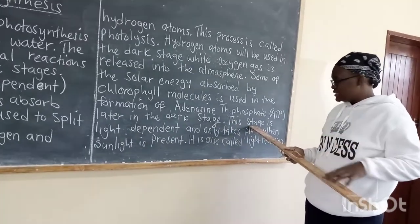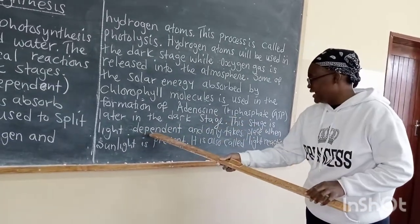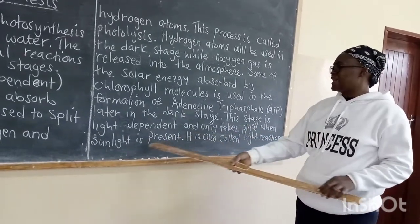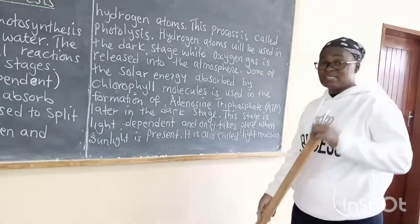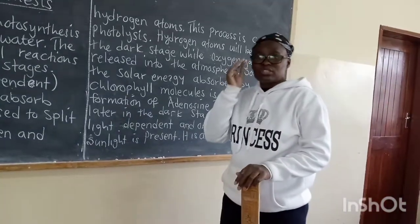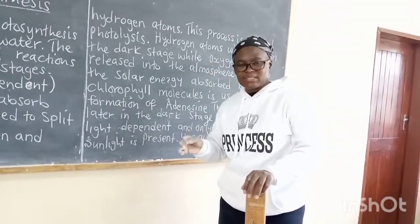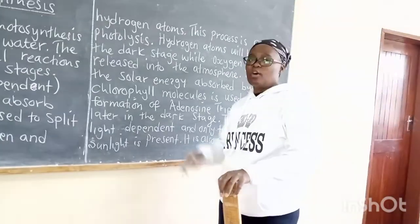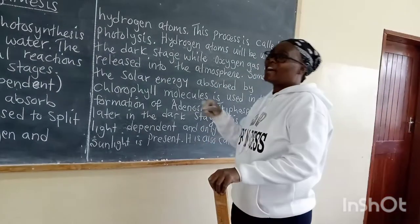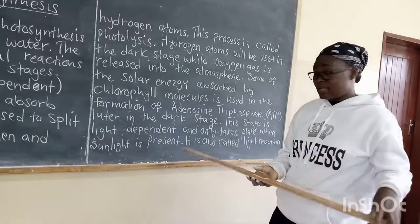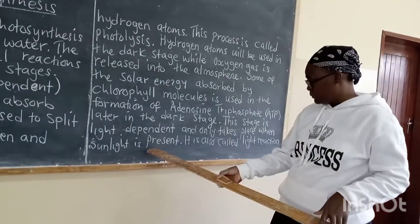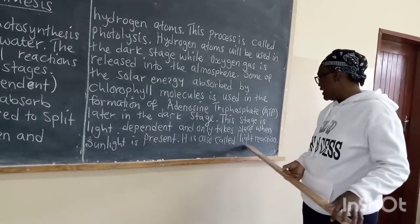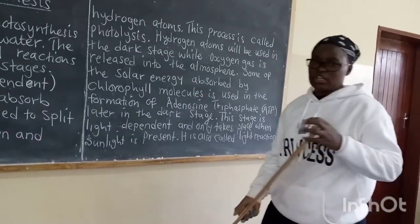This light stage is light dependent and only takes place when sunlight is present. It means the light stage cannot take place in the dark — it needs to take place when the sun is shining. We can also call this same stage the light reaction stage.